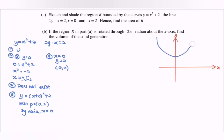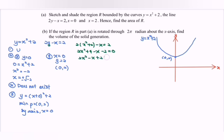From here we can sketch the graph with minimum point (0, 2), labelled y = x² + 2. Next, we find the points of intersection between the two curves. Substituting y = x² + 2 into 2y − x = 2 gives 2x² − x + 2 = 0. There is no real root — only complex roots — meaning the two graphs have no intersection point.